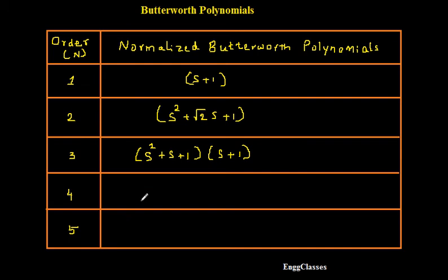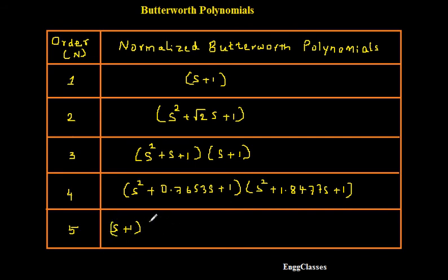For the order of 4, the Butterworth polynomial is s square plus 0.7653s plus 1, multiplied with s square plus 1.8477s plus 1. Similarly, for order 5, its Butterworth polynomial is s plus 1, multiplied with s square plus 0.618s plus 1, multiplied with s square plus 1.618s plus 1.